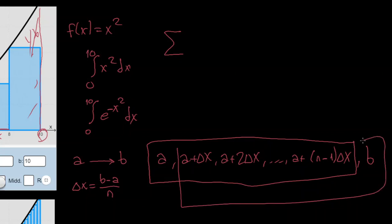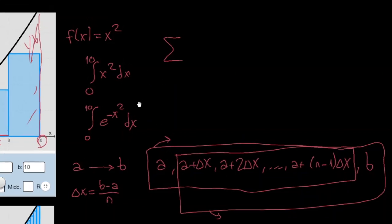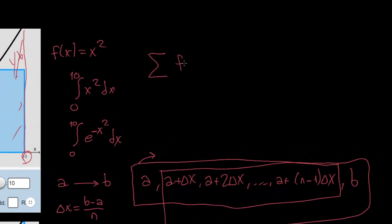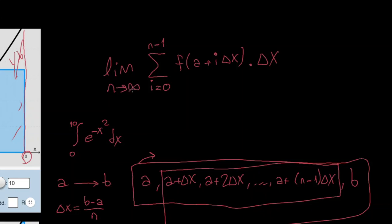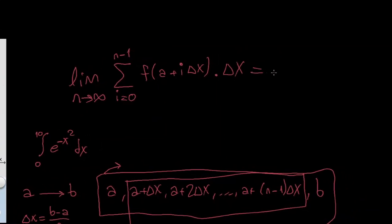This is called the right Riemann sum, and this is called the left Riemann sum — but it's not so important. I'm starting from the point A; at each step I'm adding 1 delta x to it, so I'm increasing i by 1. i starts from 0, because I want to start by counting A, and it goes up to n−1. If I multiply this by delta x, this gives me the total area of the rectangles. If I take the limit as n goes to infinity — if I take the number of rectangles to infinity — this is going to give me the integral.